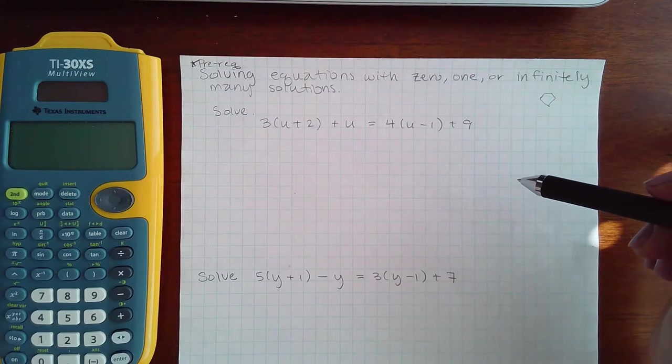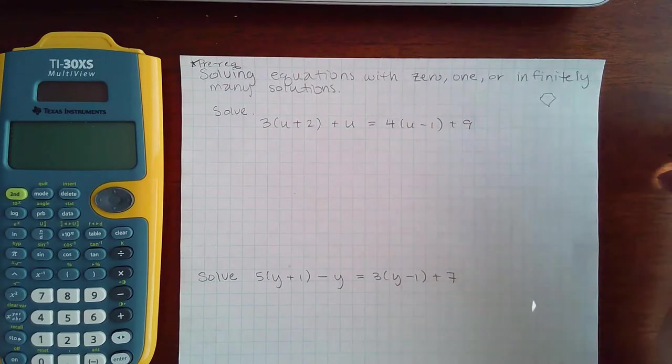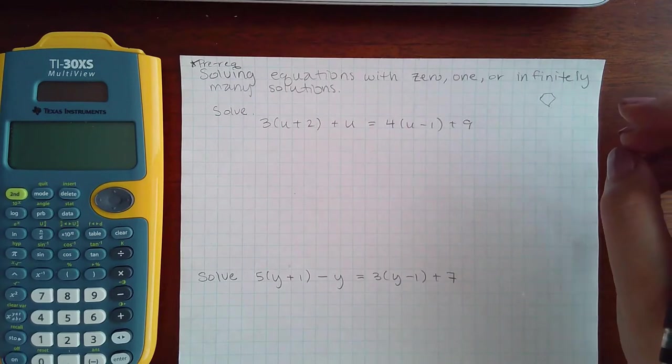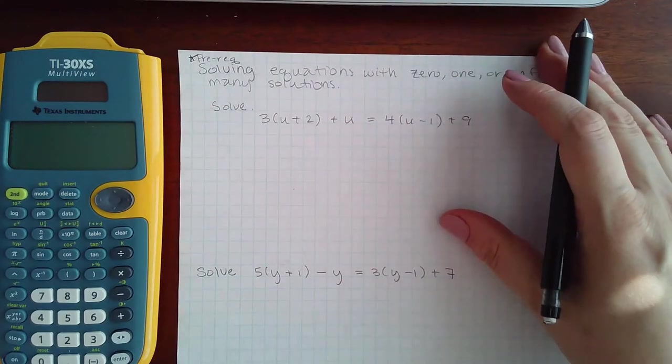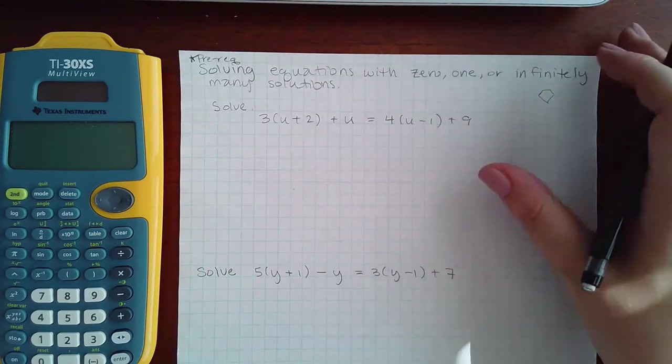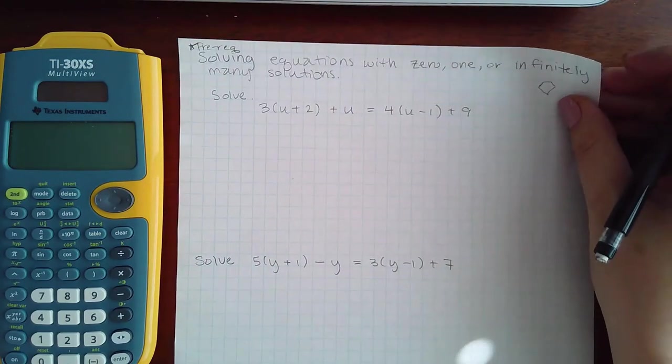So we're going to solve equations with zero, one, or infinitely many solutions. These are basically linear equations where something funny happens at the very end.